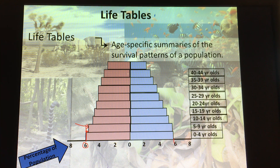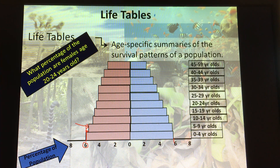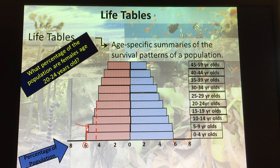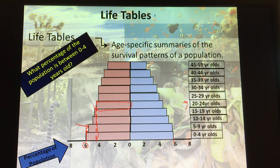This kind of goes hand in hand with the fact that men tend to engage in a little more risky behavior, especially 20 to 24 year olds. Women do live longer, and you can see this in life tables. For example, what percentage of the population are females 20 to 24 years old? You would take the female side, follow it down, and see that 20 to 24 year olds make up a little over 4% of the population. If asked what percentage of the population is between zero and four years old, you'd add both male and female — about 6% plus 6% — so about 12% of the population are four years old or under.